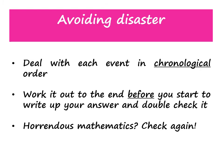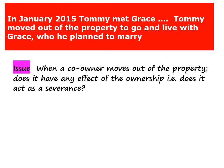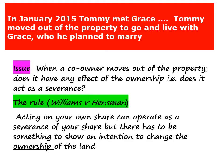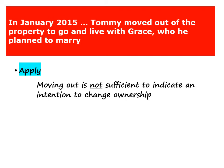The first major event to happen is that Tommy moves out of the property. The issue is whether when a co-owner moves out of a property this has any effect on the ownership — in other words, could it act as a severance? The common law in Williams v Hensman confirms that a co-owner can sever his joint tenancy unilaterally by acting on their share of the land, but it must show an intention to change the ownership of the property. Applying this, moving out of the property on its own isn't sufficient to indicate that Tommy intended to change the ownership. So I would conclude that there was no severance in January 2015.